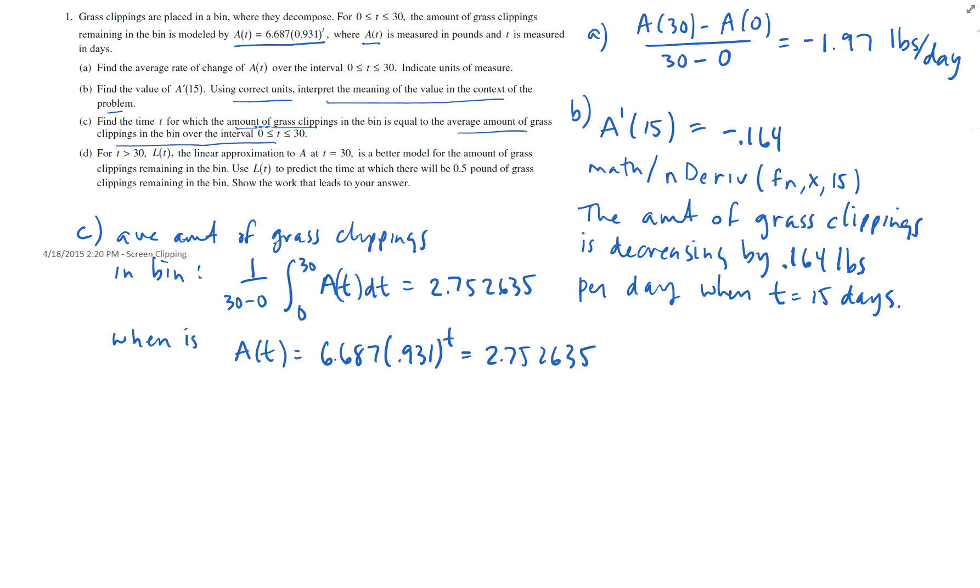Well, with your calculator, the easiest way is to go ahead and do this: 6.687 times .931 to the t, minus 2.752635, equals zero. I would go ahead and do this to graph this, y equals. So if I graph y equals this function right here, and then I find out where is it equal to zero. Well, that's where it crosses the x-axis.